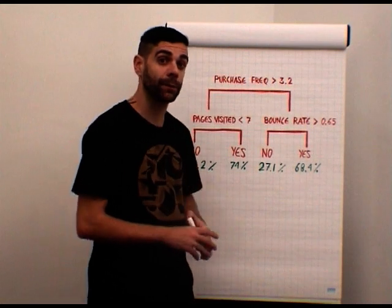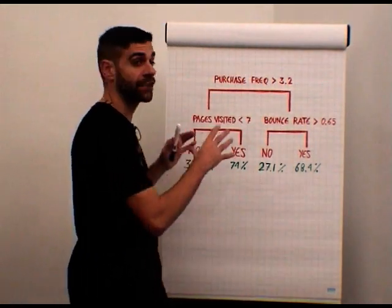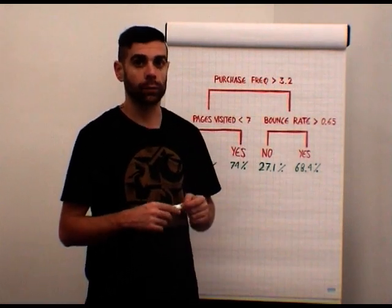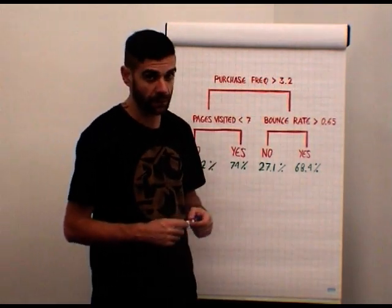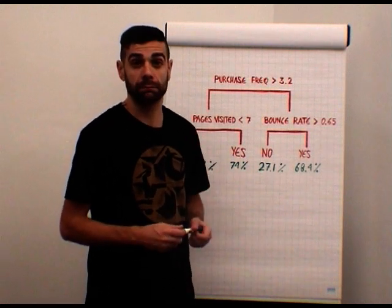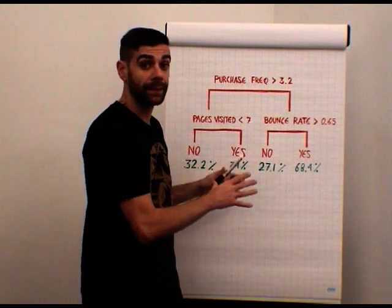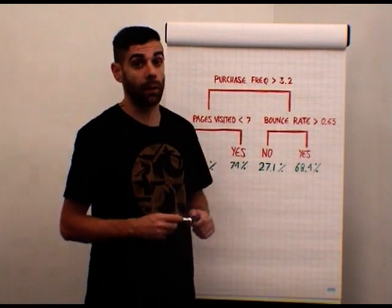In the previous example, in weather forecasting, we used a structure, a decision tree, to answer a very simple question: Will it be raining tomorrow? With a very simple answer, yes or no. We do the same, we apply the same strategy in online marketing.